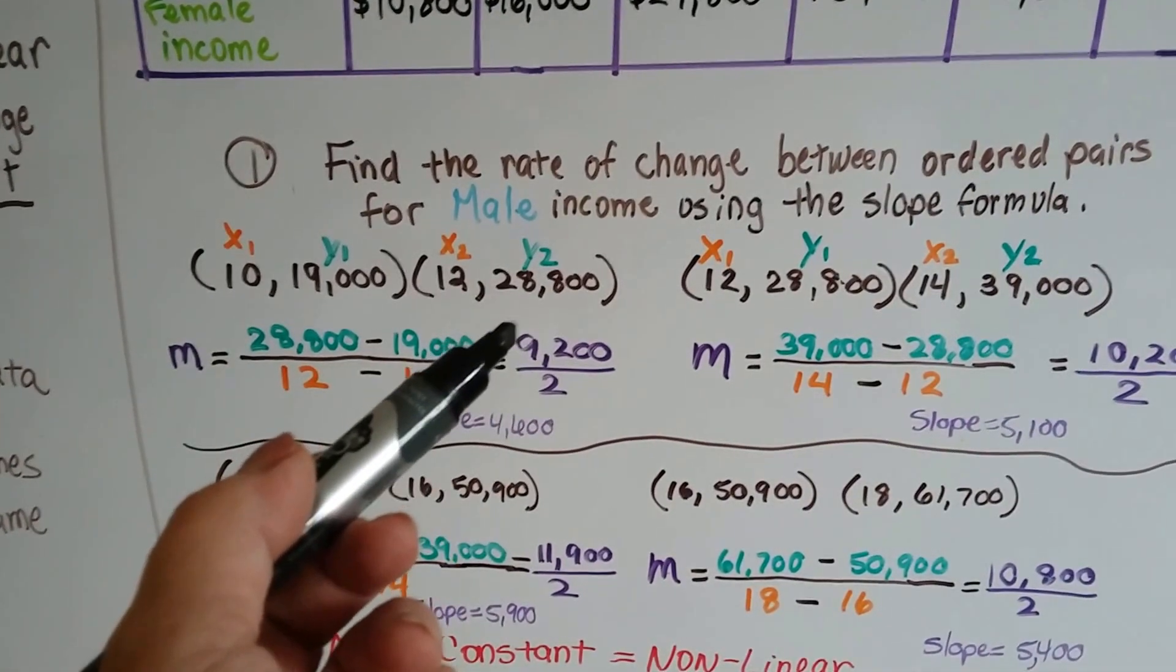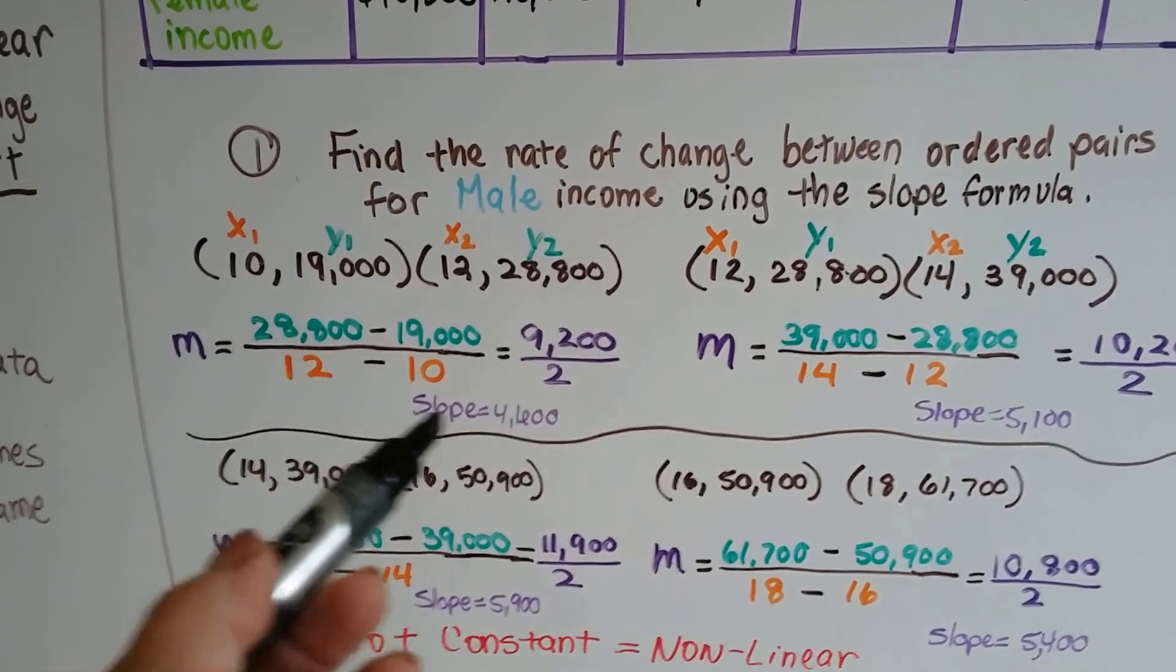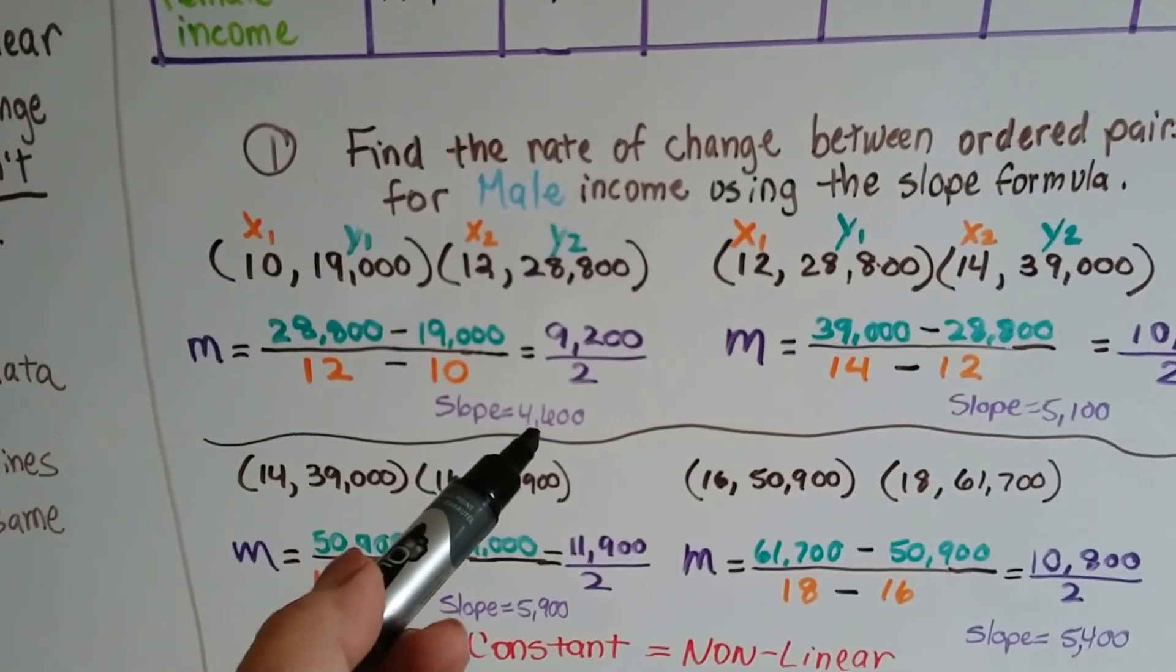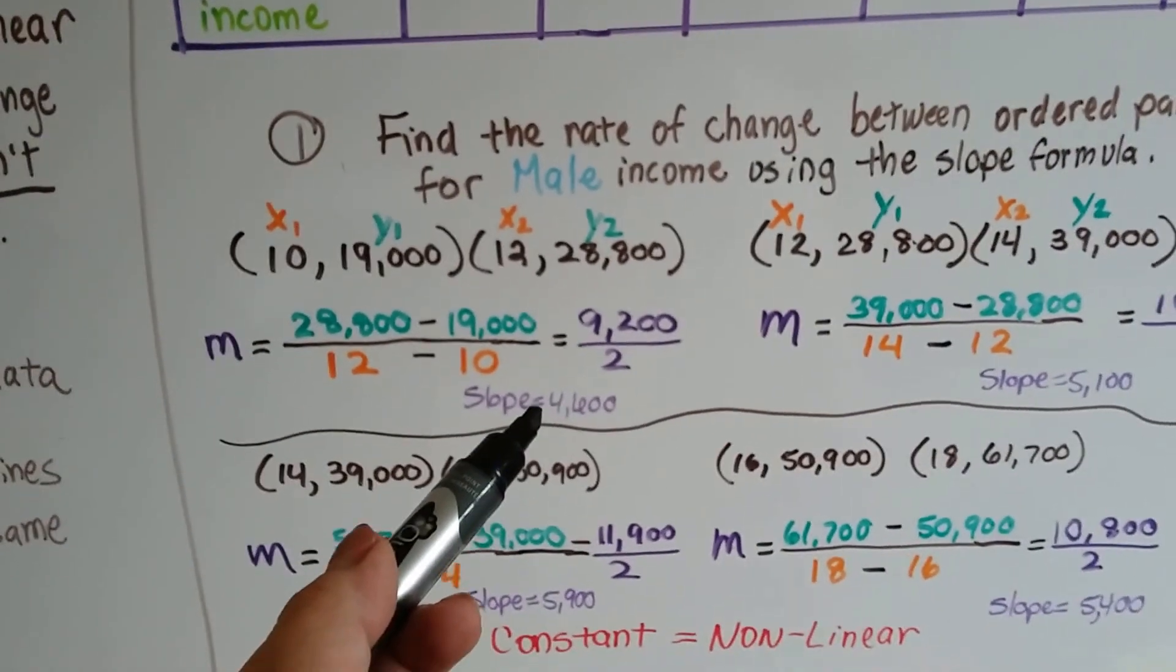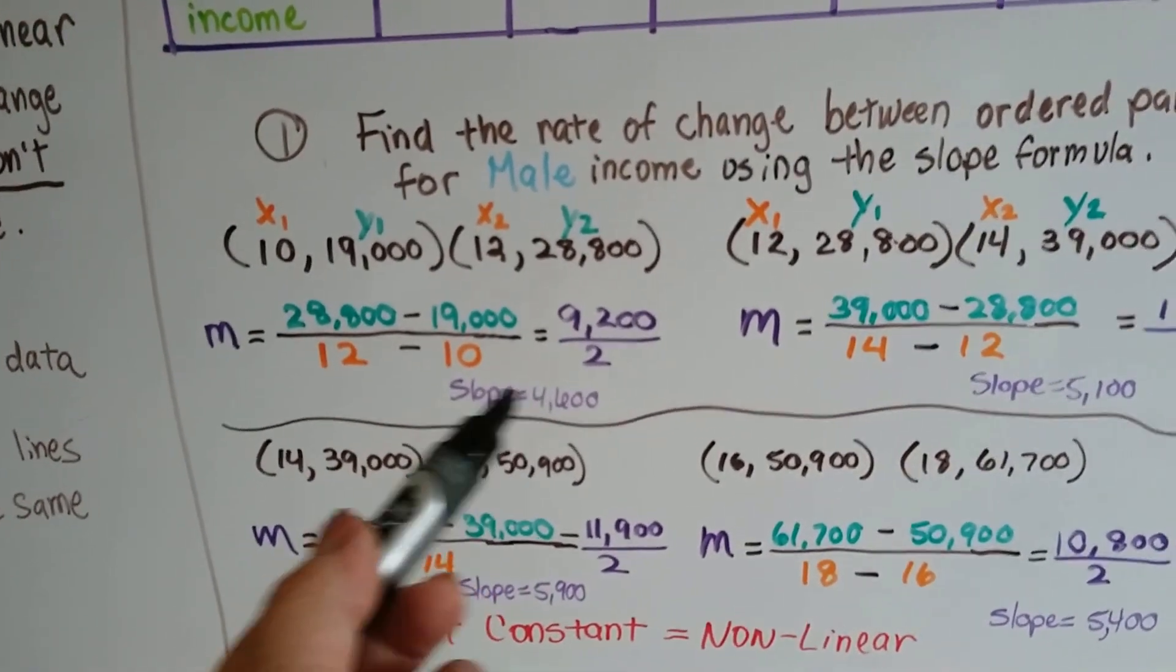They average $9,200 a year more. That means they're going to make about $4,600 a year for each year of school extra that they go. That's the slope.